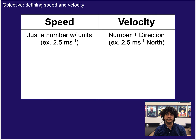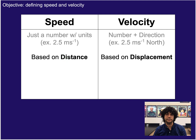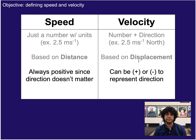Let's recap. Speed is going to be just a number with units — like 2.5 meters per second. Velocity is going to be a number with units plus a direction — so 2.5 meters per second north, for example. Speed is based on distance, so every step counts. Velocity is based on displacement, so all we care about is the length from start to finish. Speed will always be positive since we don't show direction; velocity, however, will be positive or negative to represent direction — if positive is to the right, negative is to the left.